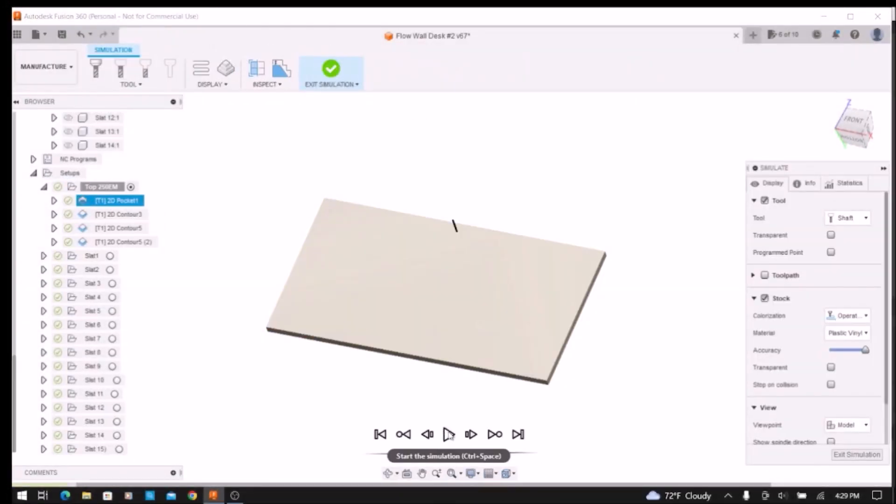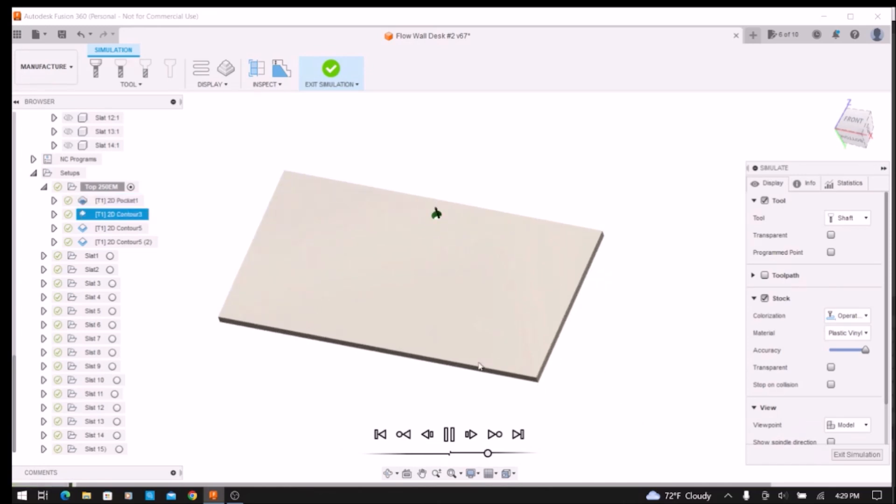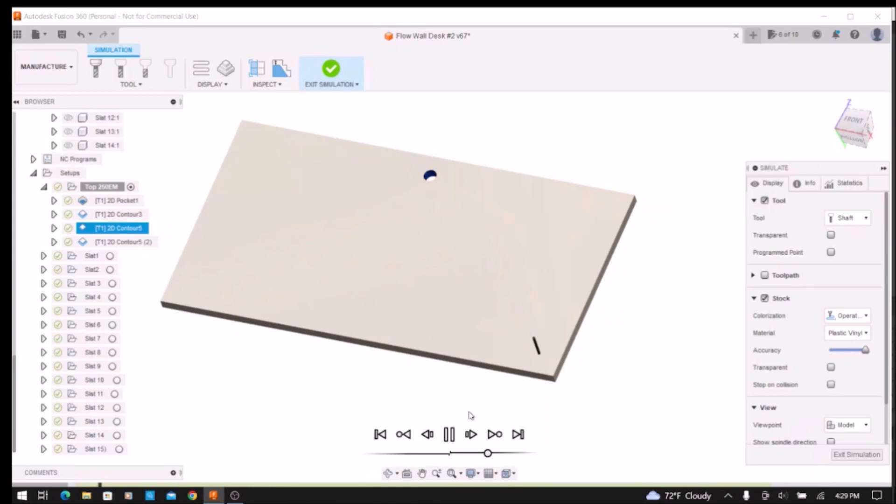Fusion 360 was also used to create tool paths for CNC machining of the parts for the project. Here is a simulation of the path used to cut the outline of the desktop.